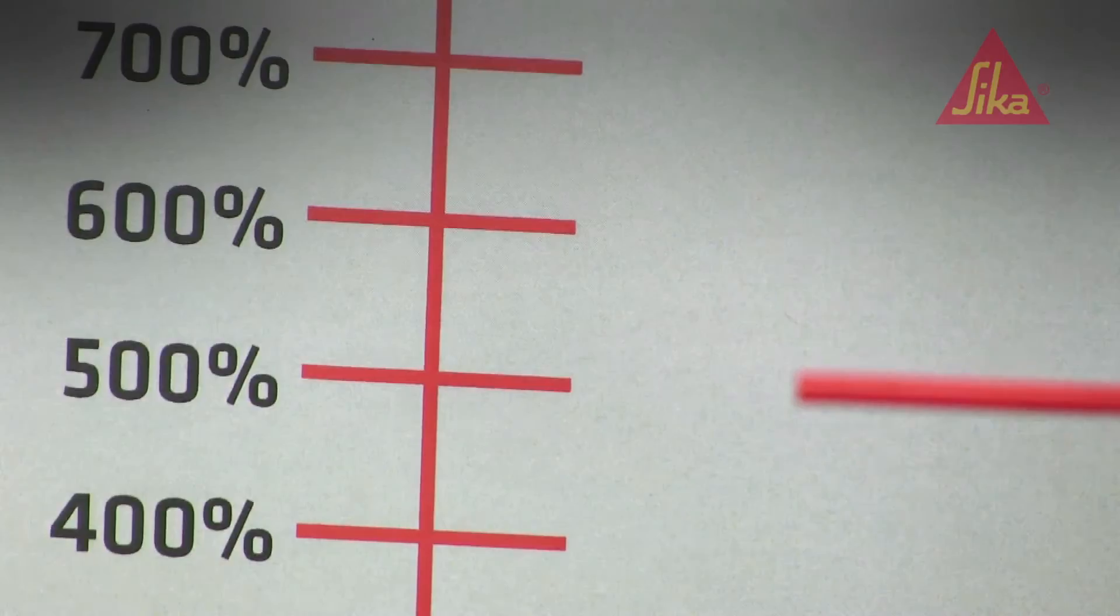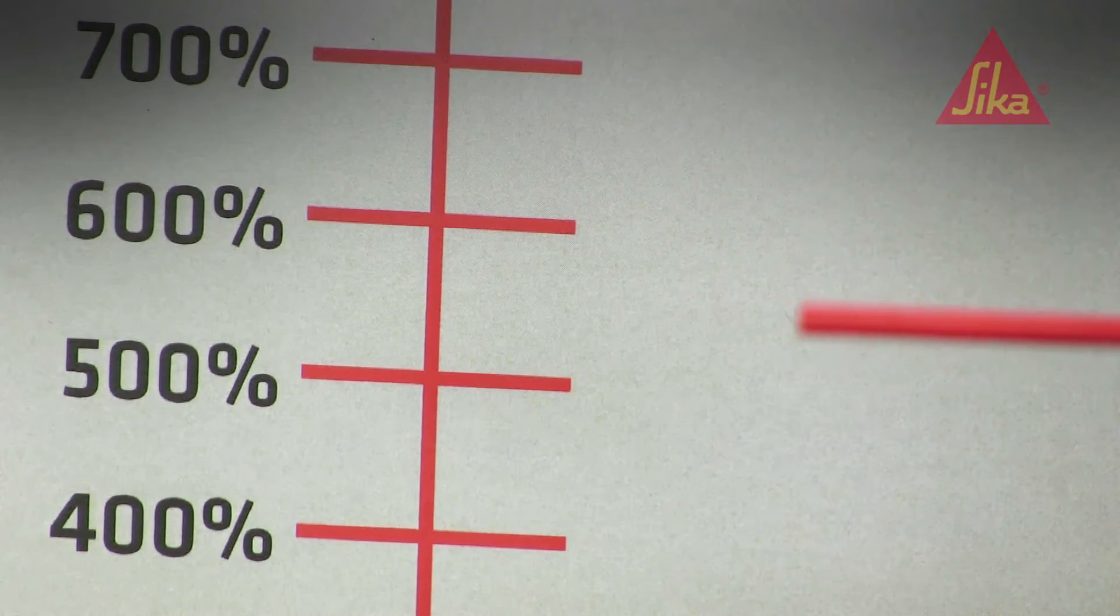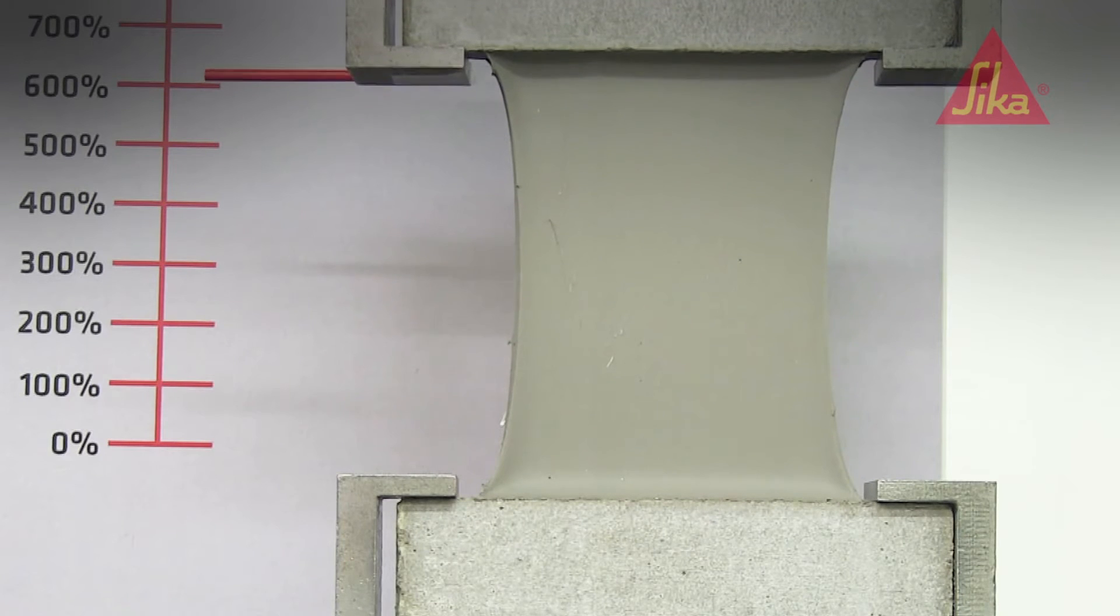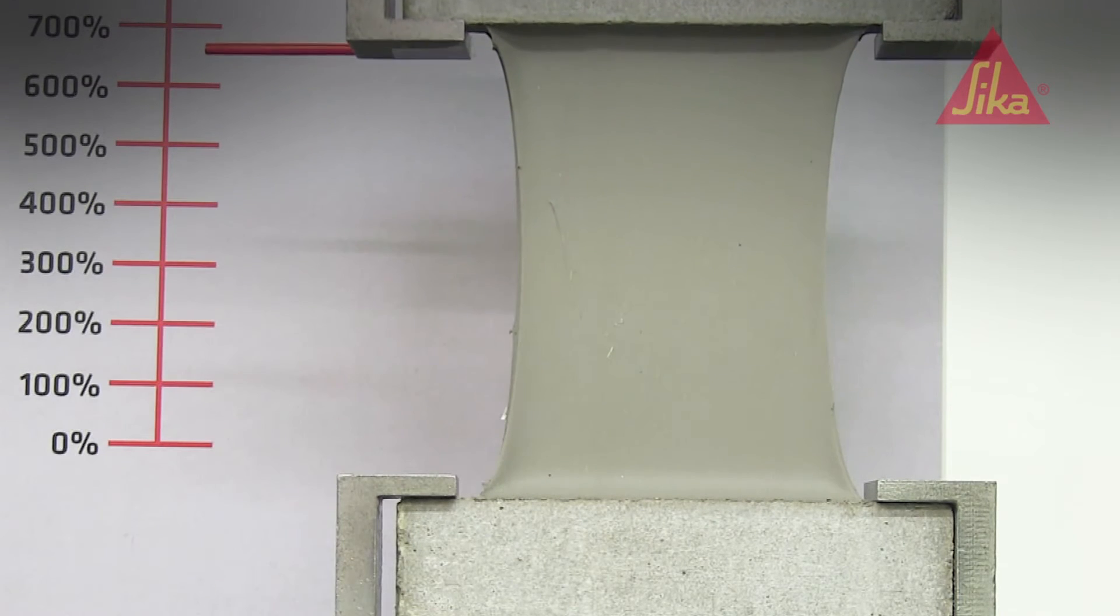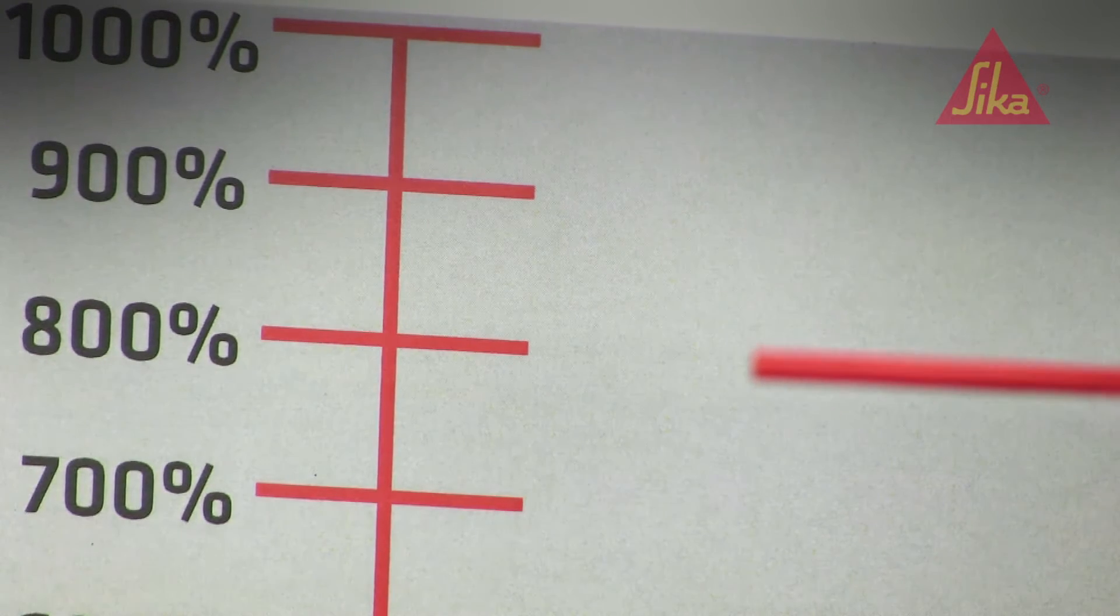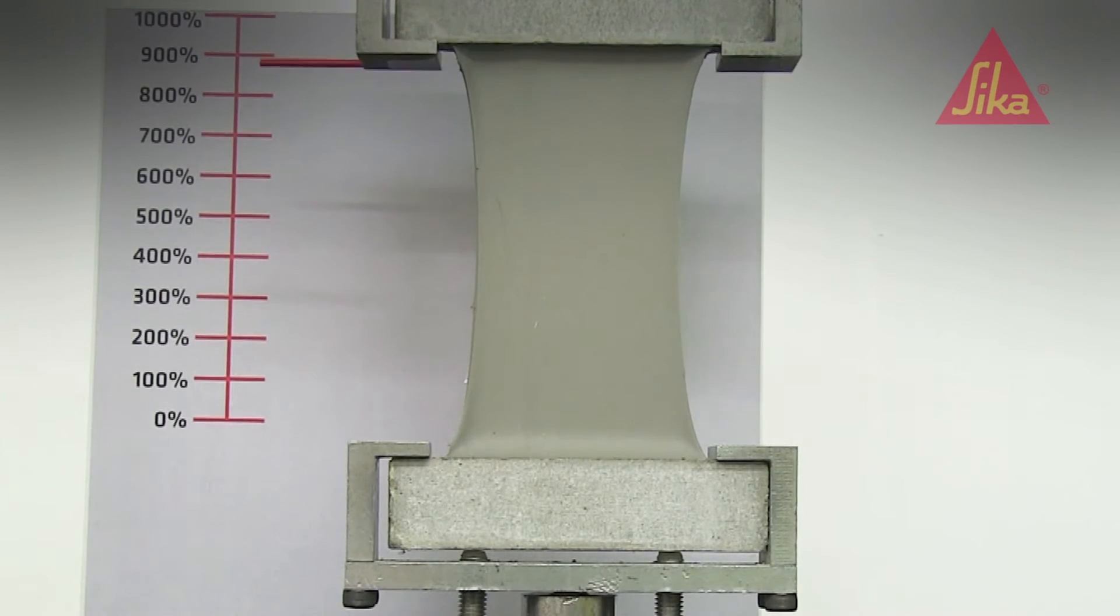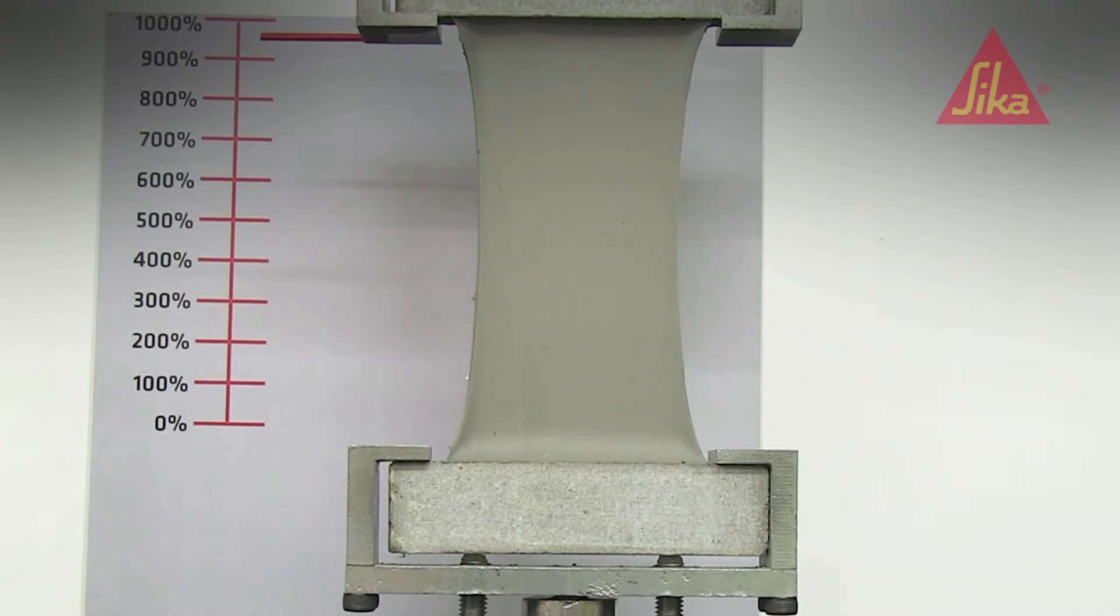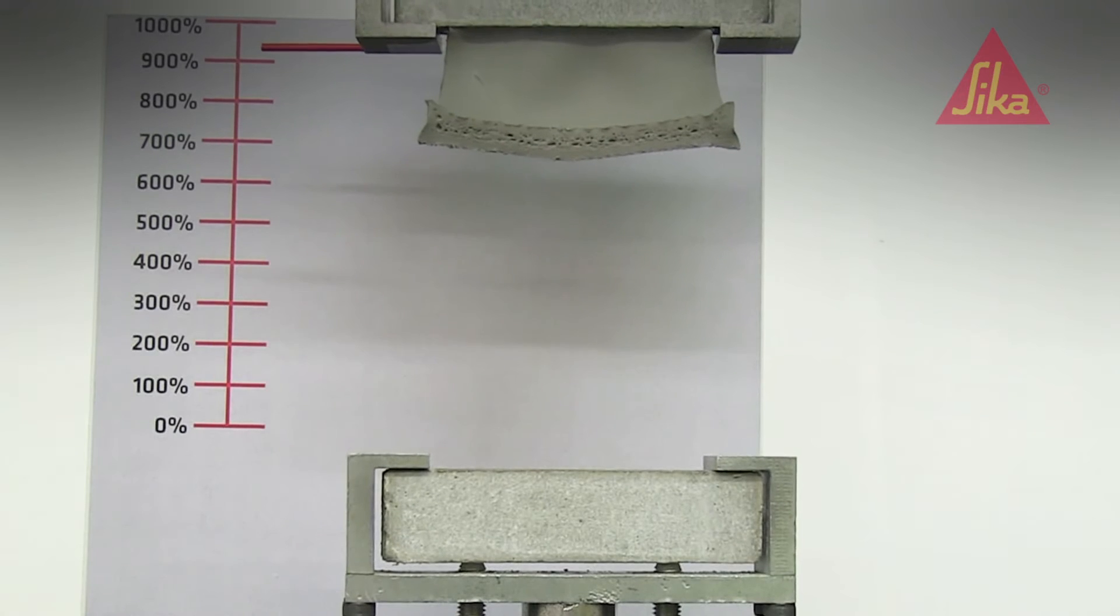It passed the 500% expansion mark easily. Then 600. 700. 800. And only when it neared 1000% expansion did the joint finally fail. Remarkable.